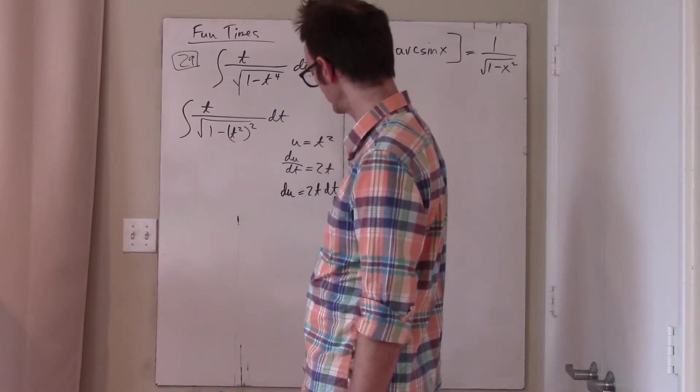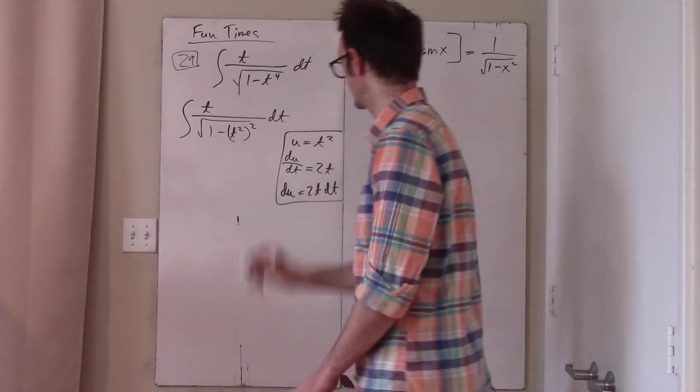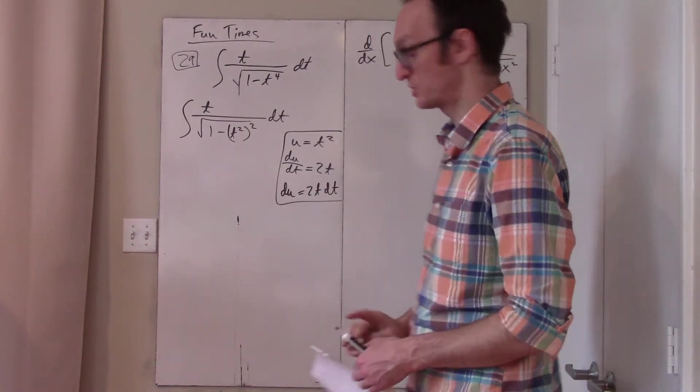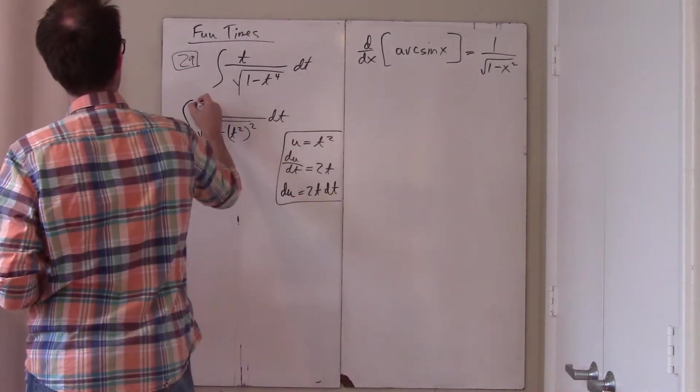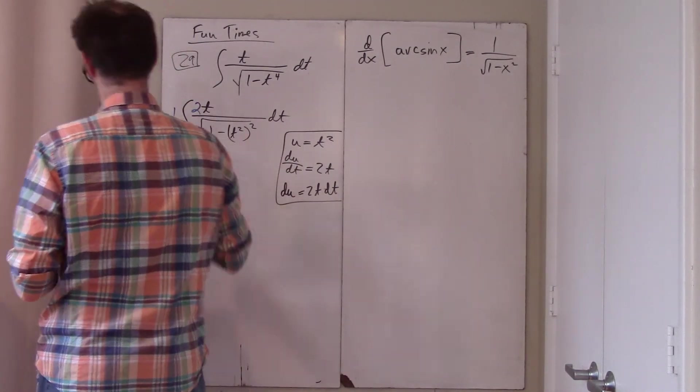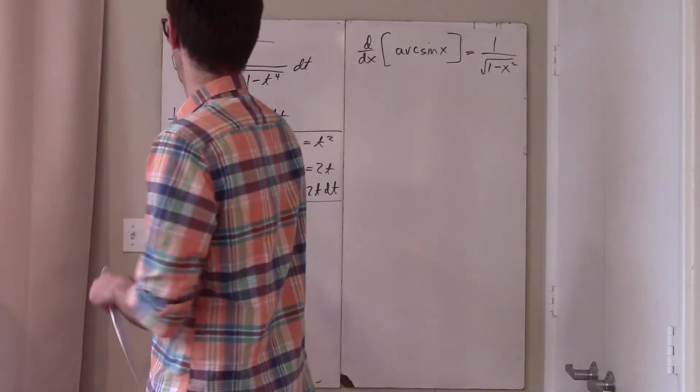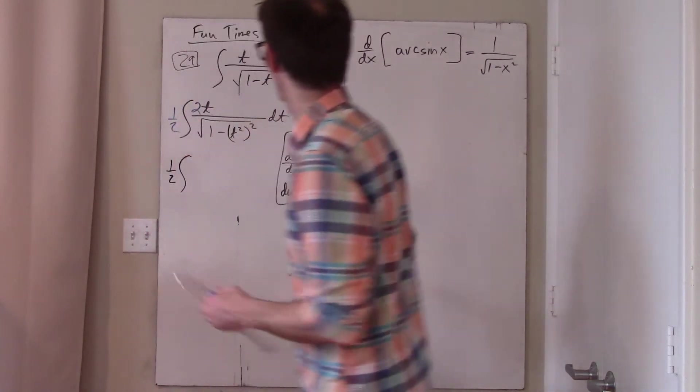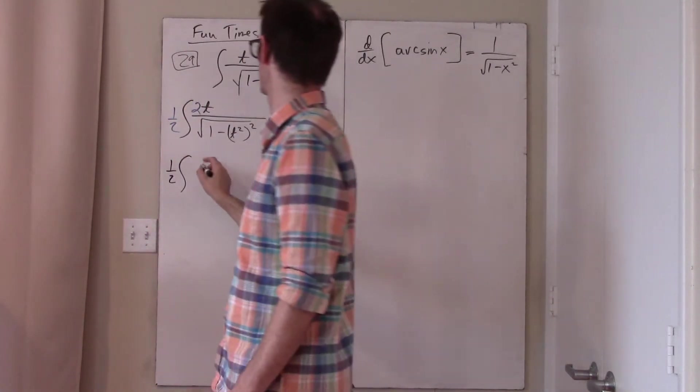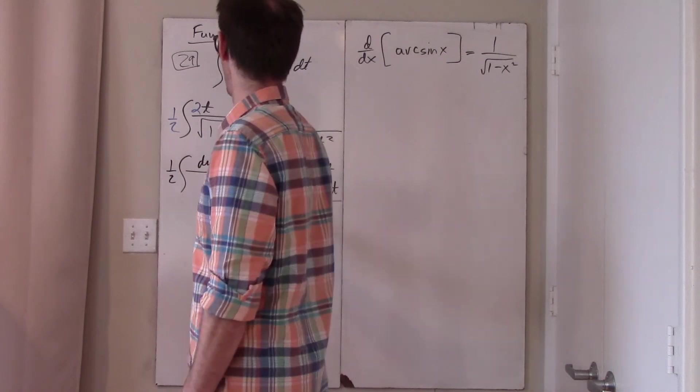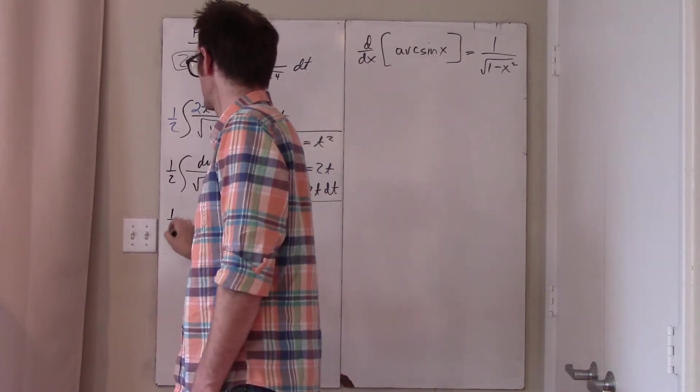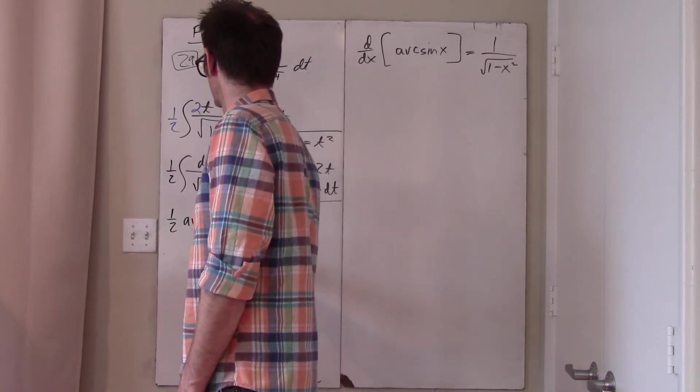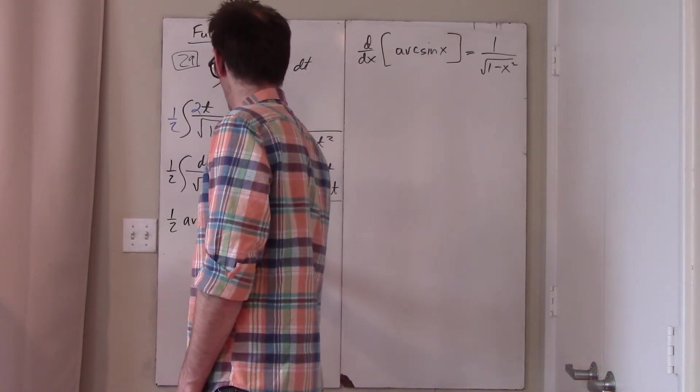And thus, I need a 2 up here, so I stick the 2 in and undo the damage with a 1 half. Therefore this can be rewritten as 1 half, the numerator is D U, and the bottom is root 1 minus U squared. That is arc sine U.